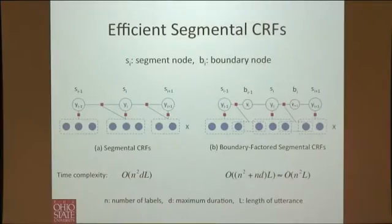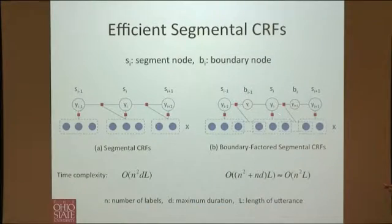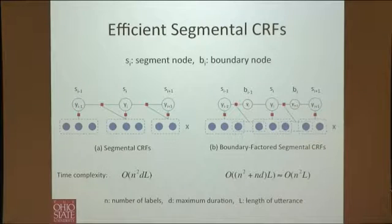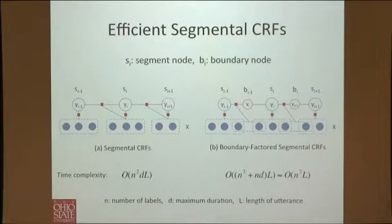Ryan called this the boundary-factored segmental conditional random field. A boundary node is a deterministic intermediate node carrying information about the segmentation. You give up the ability to jointly model the duration of both adjacent segments, but if you don't have features that require that, you can focus on knowing the time point of transitions and looking over a local window of features around each boundary.